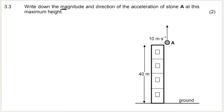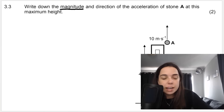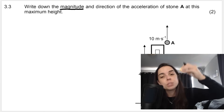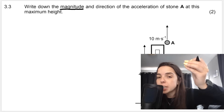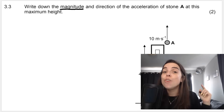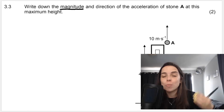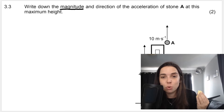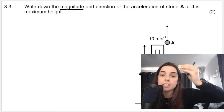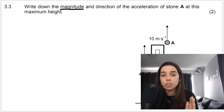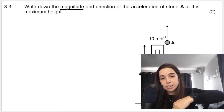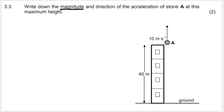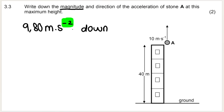Question 3.2 asks for the magnitude and direction of the acceleration of stone A at maximum height. When an object reaches maximum height, the velocity is zero. However, acceleration is always acceleration due to gravity because the object is in freefall — the only force acting on it is gravitational force. So the acceleration is 9.8 meters per second squared downward, at all points during the motion: going up, at maximum height, and coming down. Note the unit is meters per second squared (m·s⁻²); if you write m·s⁻¹ that refers to velocity.